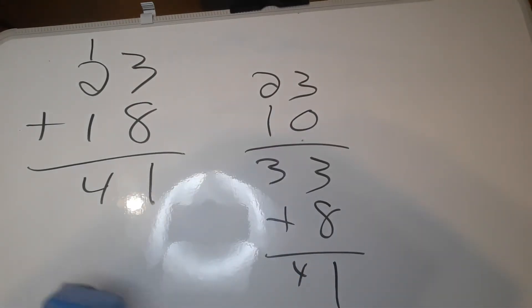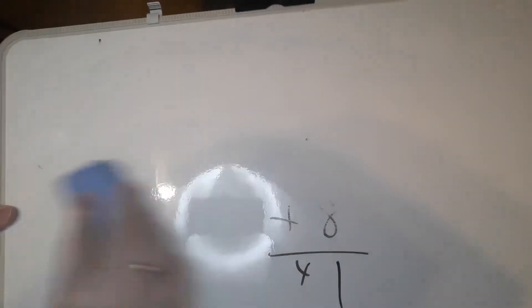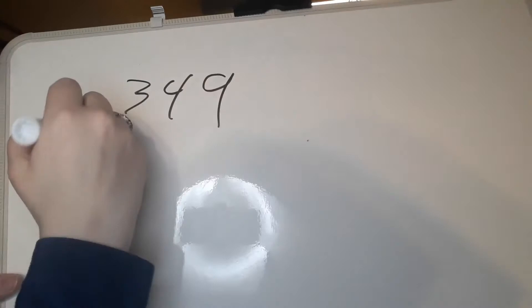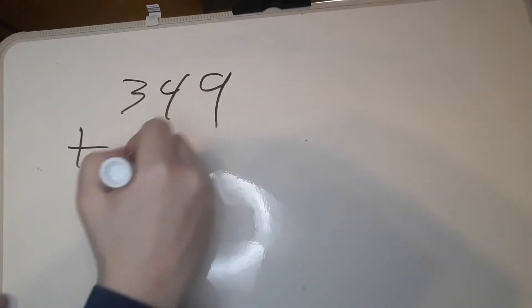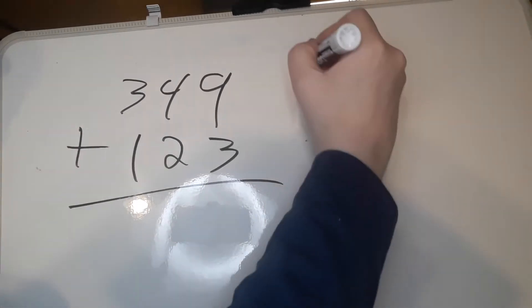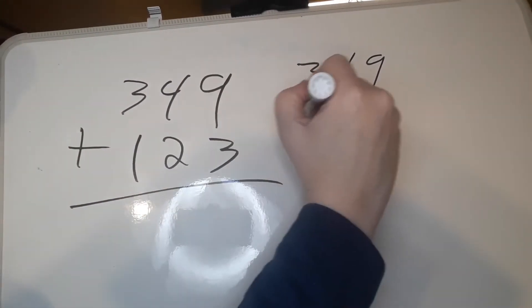We can also use it for three-digit numbers. Let's do 349 plus 123. Okay, we start with 349. We add 100 so it's 449.